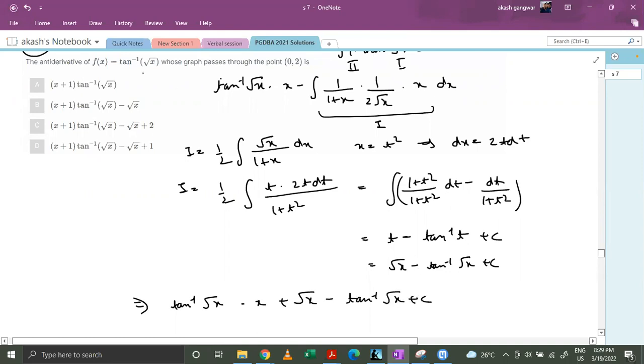Now we see that it passes through point 0,2. So basically this value is 2 when x equals 0. This gives c equals 2. So we can clearly see that c is the correct option.